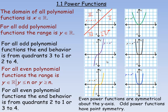Now, if there's a reflection in the x-axis — for example, if we take y equals x cubed and multiply the equation by negative 1 — y equals negative x cubed flips upside down. So if the leading coefficient is negative, instead of going from quadrant 3 to 1, it will actually go from quadrant 2 to 4. So its end behavior would be quadrant 2 to 4.